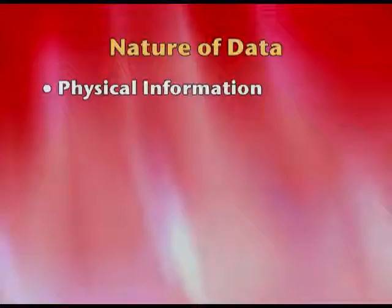Let us move on to the next topic: nature of data. We have five kinds of data. Data basically means information. The first is physical information, which refers to the physical aspects of a person we are studying — it could be measuring blood pressure, heart rate, height and weight, or tiredness level of a person. All of this is the bodily, physiological data.